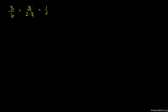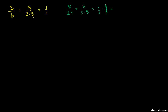Just to hit the point home, if we had 8 over 24, once again we know that this is the same thing as 8 over 3 times 8, or the same thing as 1 over 3 times 8/8. The 8's cancel out, and we get this in lowest terms as 1/3.